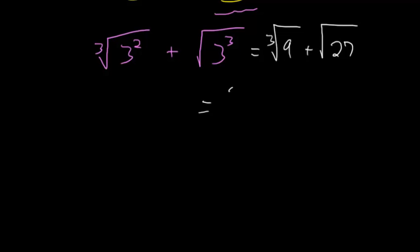you get 2.08, and the square root of 27 in a calculator is 5.196. And adding these together, you get 7.276.